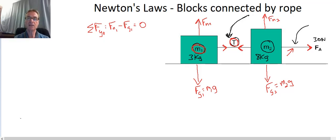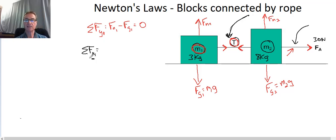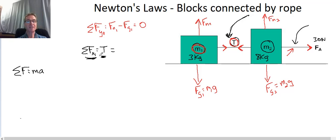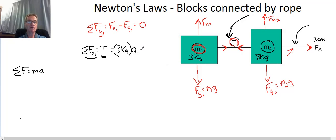What's interesting is the x-direction. The sum of forces in the x-direction for block 1 — the only x-force is T, the tension. So the sum of forces equals T, and by Newton's second law that equals M times A, which is 3 kilograms times A1. That's our equation for block 1.